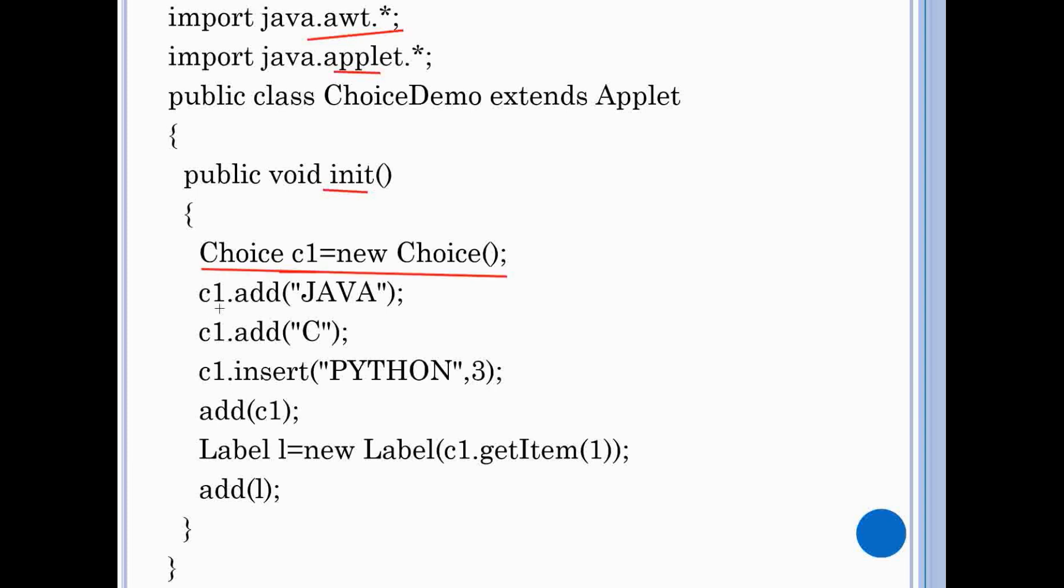Here we add two items with string JAVA and C respectively with method add of choice class. After that we insert PYTHON string in choice at specified index with the help of insert method of choice. After all this we add choice box to the applet window.